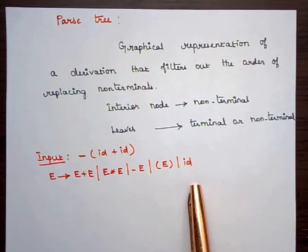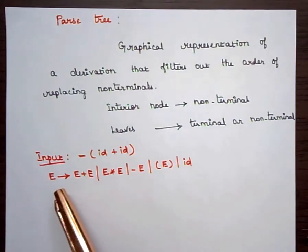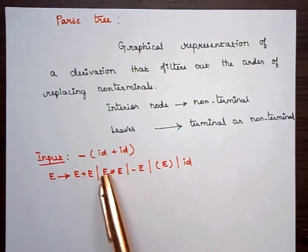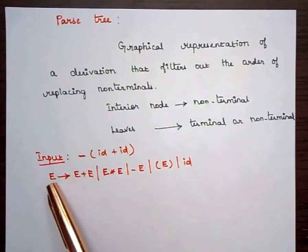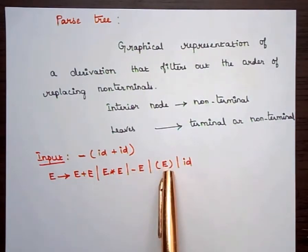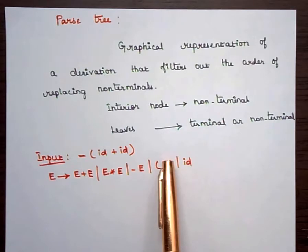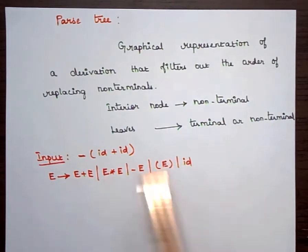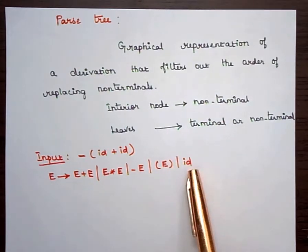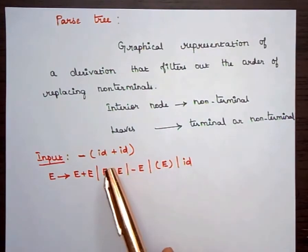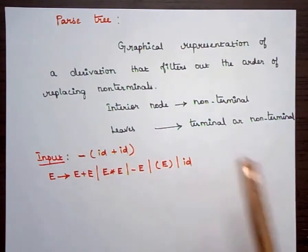This is the given grammar. It contains the productions: E implies E plus E, E implies E star E, E implies minus E, E implies E enclosed inside parenthesis, and E implies id. With these production rules we are going to construct the parse tree for the given input.